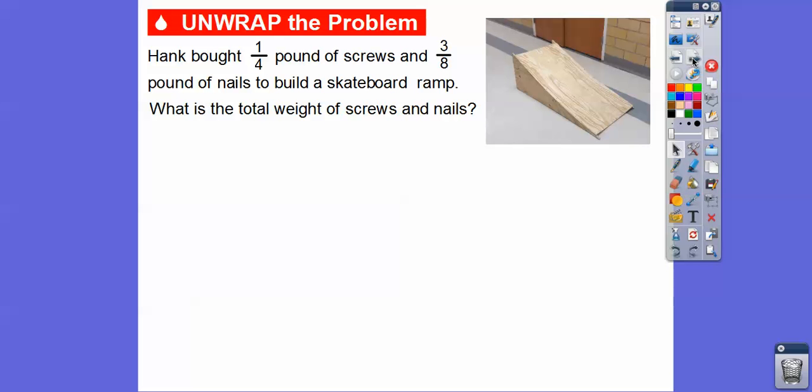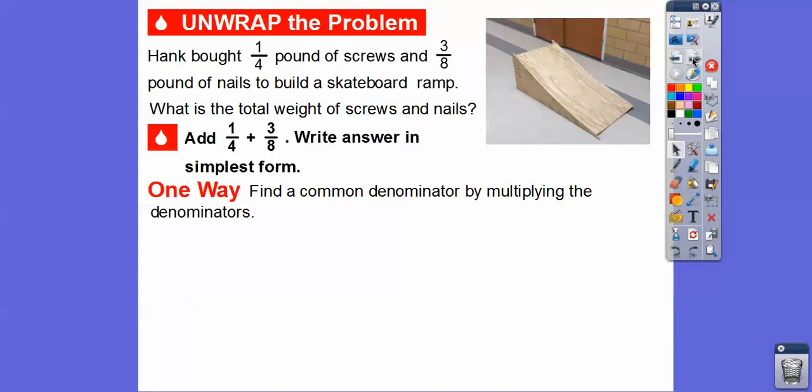Hank bought one-fourth pound of screws and three-eighths pound of nails to build a skateboard ramp. What is the total weight of the screws and nails? We're going to add one-fourth plus three-eighths and write the answer in simplest form. One way is to find a common denominator by multiplying these two denominators.